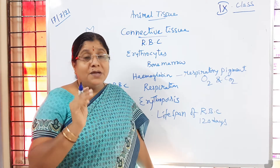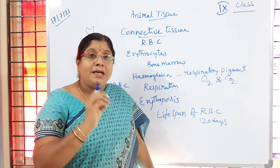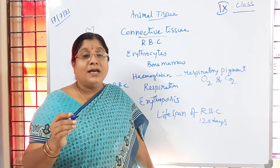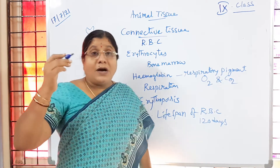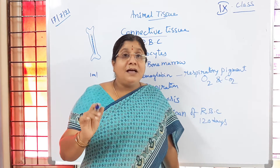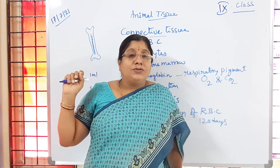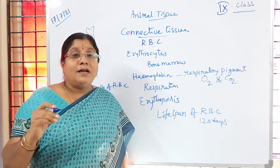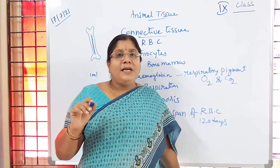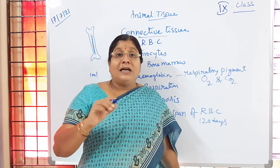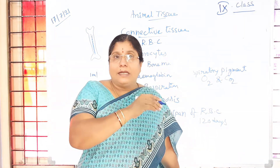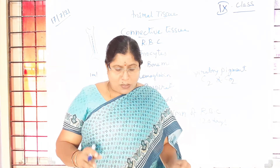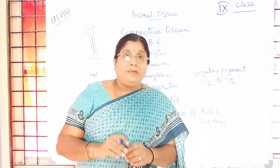In embryonic conditions, when the baby is developing in the mother's womb, RBC are produced in the spleen and liver. In adults, new RBC are produced in the bone marrow. After death, RBC reach the spleen where they are destroyed. Lysosomes help in destroying dead RBC and other cells.